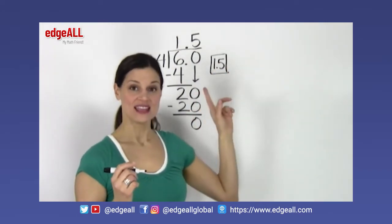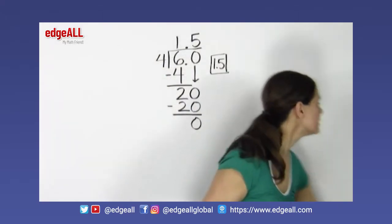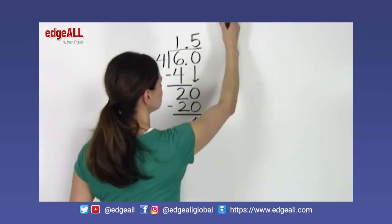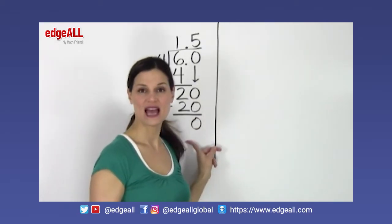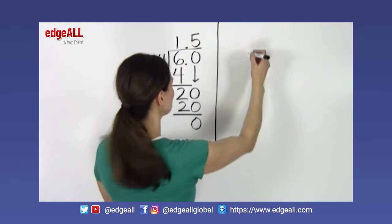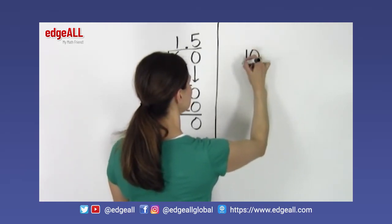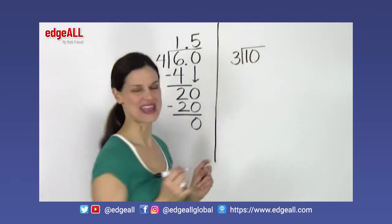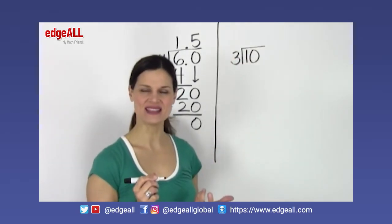However, this isn't always possible. Sometimes we have a problem that doesn't get us to a point of a 0 remainder. So for example, if I have the number 10 and I want to divide by 3 — 10 divided by 3 — let's see what happens.